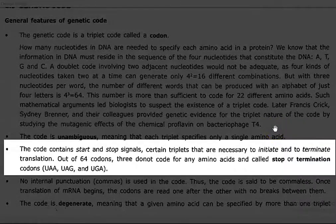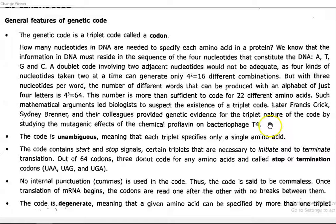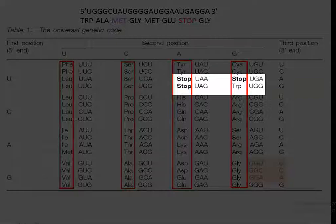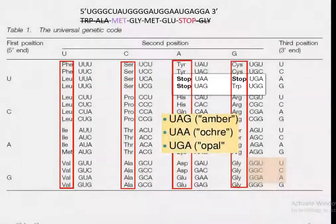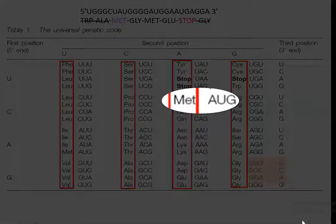The code contains a start as well as a stop signal. Certain triplets necessary to initiate and terminate the translation process are also arranged in the list of codons. Out of 64 codons, 3 codons act as stop codons: UAA, UAG, and UGA. The start codon is AUG, which codes for the amino acid methionine or formyl methionine.